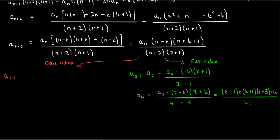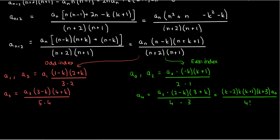For odd index coefficients, we start at a₁, which is also an arbitrary constant from initial or boundary conditions. From the recursion relation, a₃ equals a₁ times (1 minus k)(2 plus k) over 3 times 2, and a₅ equals a₁ times (k minus 3)(k minus 1)(k plus 2)(k plus 4) over 5 factorial. We can keep going for a₇, a₉, and so on.